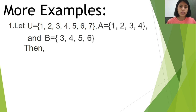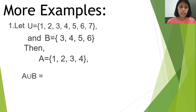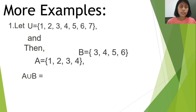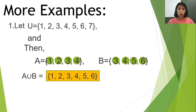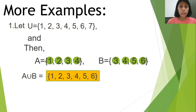Next, we find the union of sets A and B. For union, we combine all the elements of A and B. Combining {1, 2, 3, 4} and {3, 4, 5, 6}, our answer is {1, 2, 3, 4, 5, 6}. Remember, for union we need to combine.